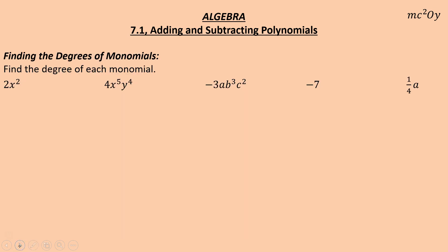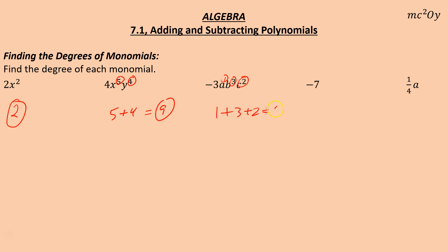Let's practice finding the degree of each monomial — I hope you'll pause and try it on your own. Looking at variables only and their powers: it's squared, so degree two. We have a five and four, so five plus four is degree nine. We have first, third, and second — one plus three plus two is degree six. No variables, so degree zero. And then we have a first degree. Remember, numbers don't matter here, only the variables and their powers.